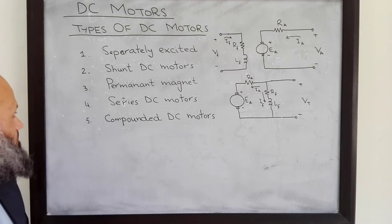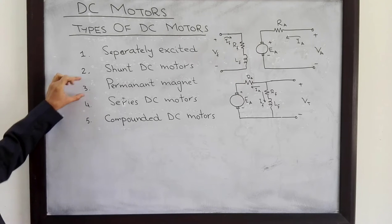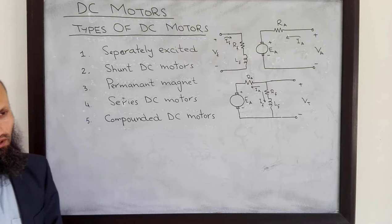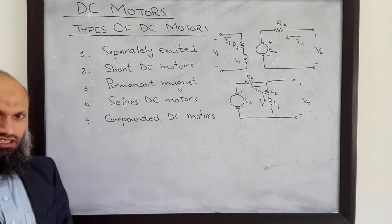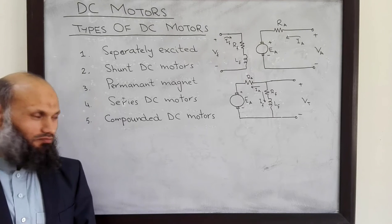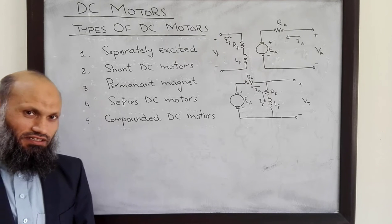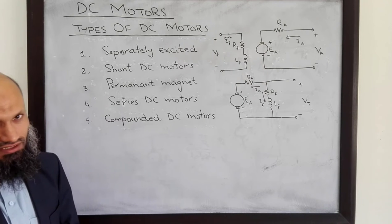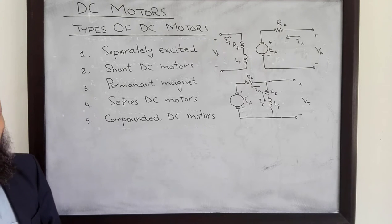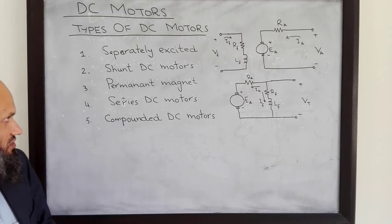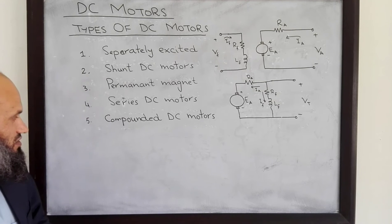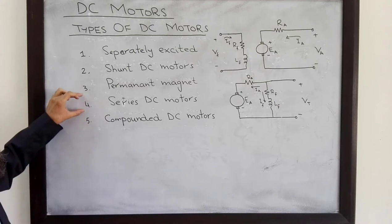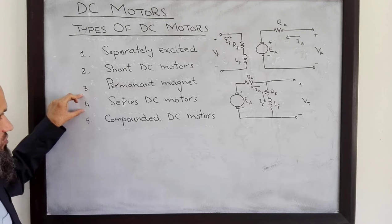In permanent magnet DC motors, the main magnetic field is created by permanent magnets, and therefore we do not have field windings. We only have the armature circuit in the case of permanent magnet DC motors.